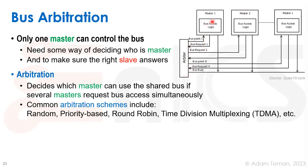The arbiter is a controller where each master has bus access logic including a request line and a grant line. Each master raises its request line to say it wants to transfer. If only one requests, the arbiter grants access easily. But if several masters raise their hand simultaneously — like students in a classroom all wanting to talk — the arbiter must decide who goes first, otherwise they all talk at once and cause cacophony.